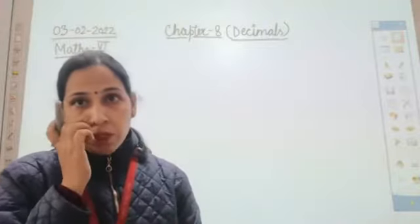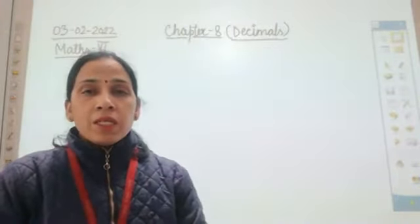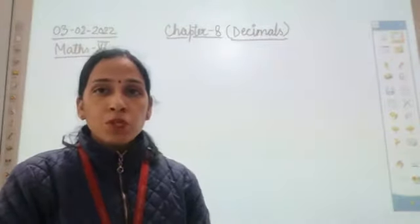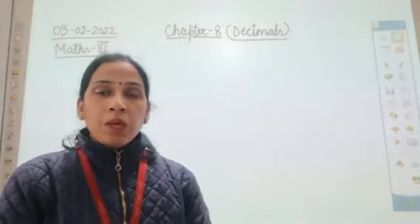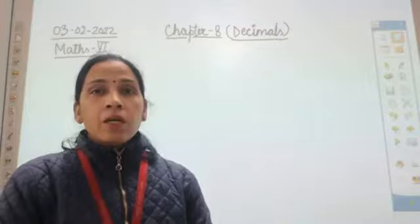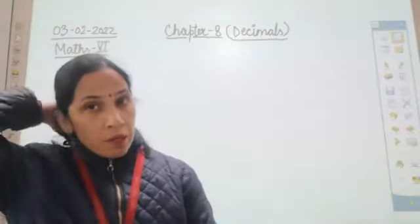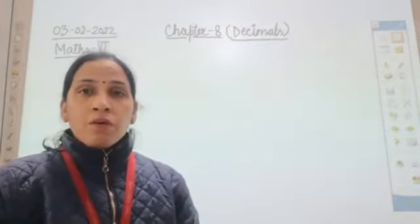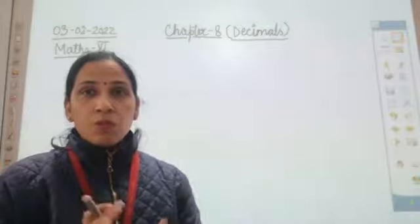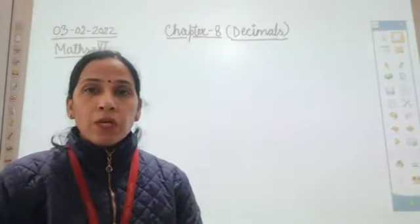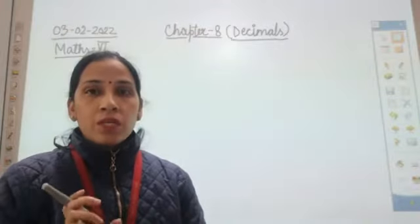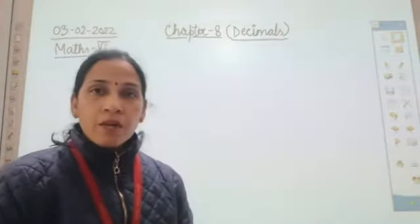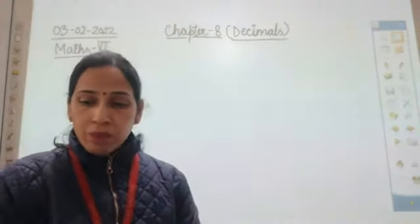Today we are going to start with chapter 8 - decimals. First of all, you need to understand what we mean by decimal. A decimal is a point which is placed in between two numbers. After this point, these numbers are assigned another place value, and we need to understand what place values will be assigned to them.